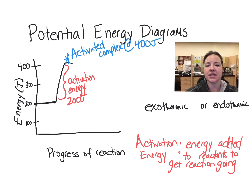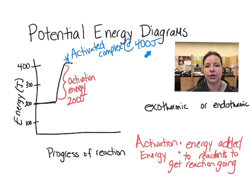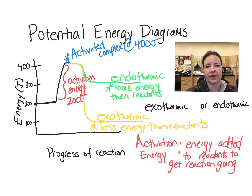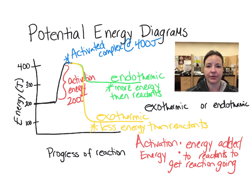This particular graph is going to require 200 kilojoules of energy in order to get activated. The energy of the activated complex is 400 joules. After the reaction occurs, the energy of the products tells us if this reaction is exothermic or endothermic. If the energy is lost from the reaction, then it is an exothermic reaction and energy is exiting.